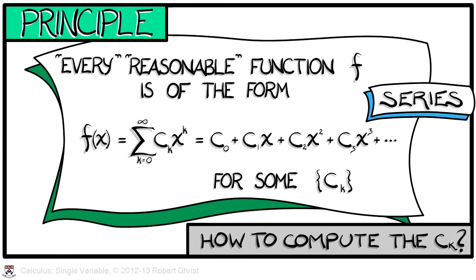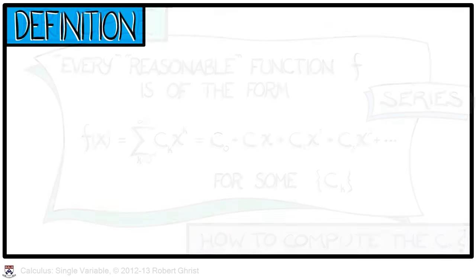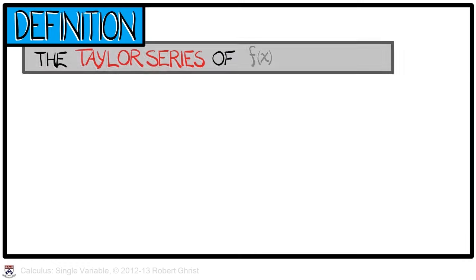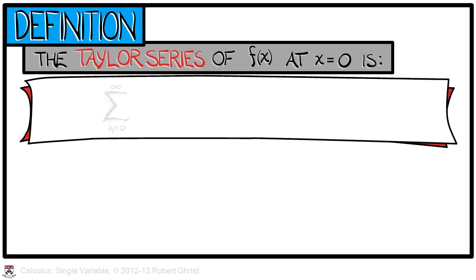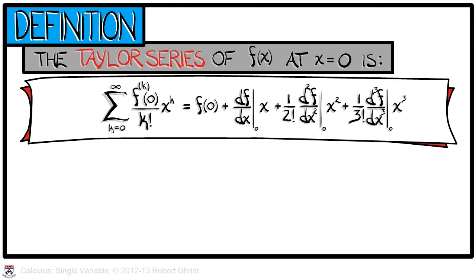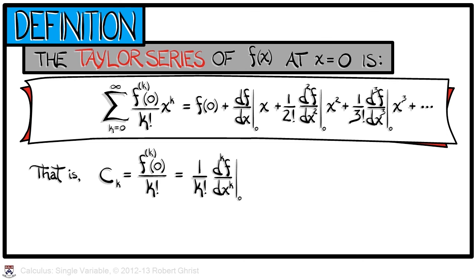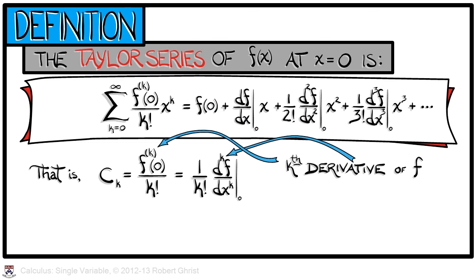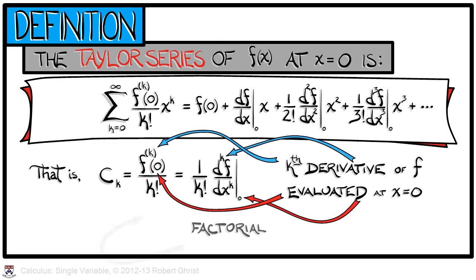We are first led to the question: how do we figure out or compute these coefficients? The following definition is critical. The Taylor series of a function f at an input 0 is: f at 0 plus the derivative at 0 times x plus 1 over 2 factorial times the second derivative at 0 times x squared, etc. That is, the k-th coefficient is equal to the k-th derivative of f evaluated at the input 0 and then divided by k factorial.